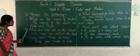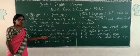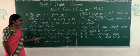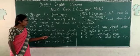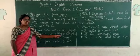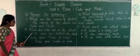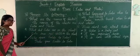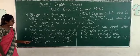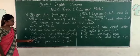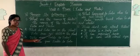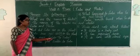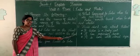Second question: What did Lalu see on the plant? Lalu saw red chilli on the plant. Lalu. L-A-L-U. Lalu saw. S-A-W. Saw red. R-E-D. Red chilli. C-H-I-L-L-I. Chilli on the plant. P-L-A-N-T. Plant.